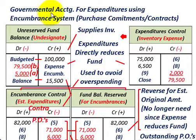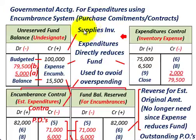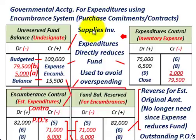What we're going to be going through here is governmental accounting for expenditures using the encumbrance system. We use the encumbrance system when we have purchase commitments or contracts that we enter into. We're going to go through a basic example where the city is ordering some supplies inventory and will need to set up an encumbrance system for ordering and receiving those supplies.